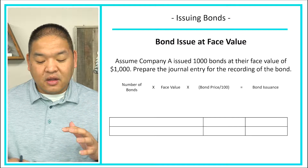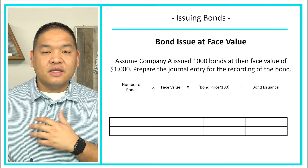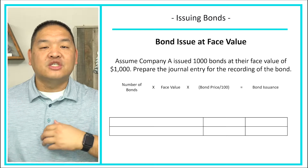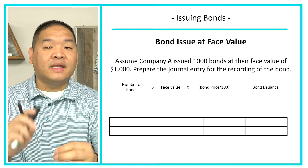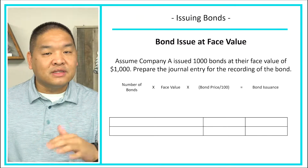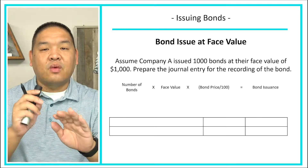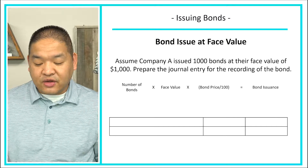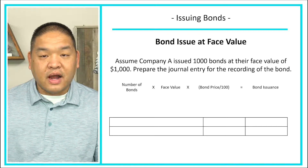Let's start by looking at a bond issued at face value. That means we are issuing a bond for $1,000 — and most bonds are issued for $1,000. The face value of the bond is also $1,000, so it's the same money basically at the end of the day. There is an interest rate stated on the bond, but we're still going to issue it for $1,000 and receive $1,000. Assume company A issued $1,000 bonds at their face value of $1,000. Prepare the journal entry for recording the bond.